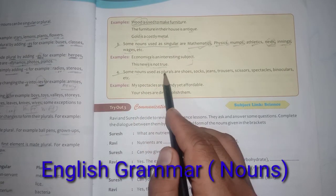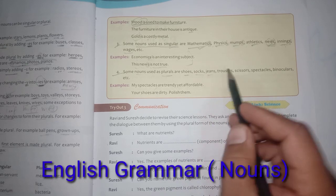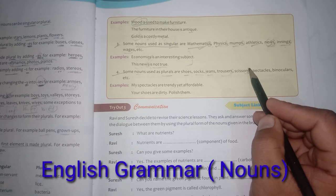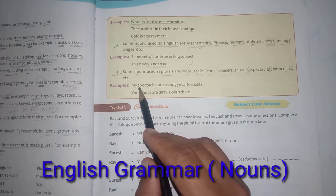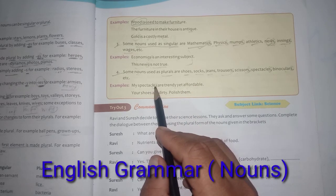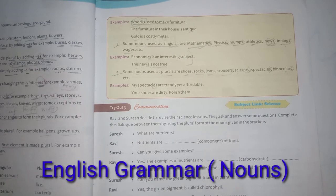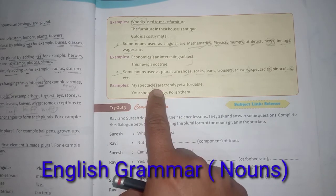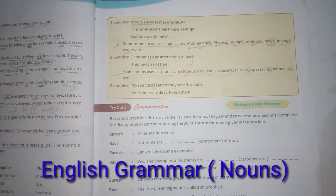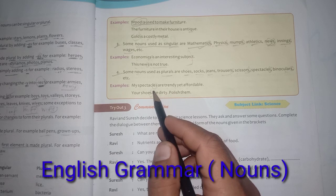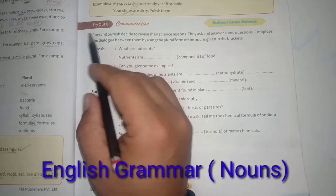Some nouns are always used as plural: shoes, socks, jeans, trousers, scissors, spectacles, binoculars. For example: 'My spectacles are trendy yet affordable' — even though you wear one pair, the word is plural. Similarly, 'Your shoes are dirty' — you use one pair of shoes but we say shoes with an -s, and it is used in plural form always.